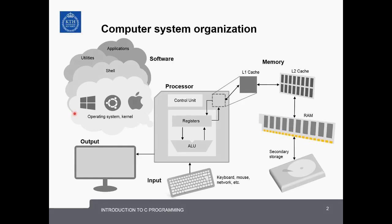Let's begin with a look at how a modern computer system is organized. At the heart of the computer system is the processor. Connected to the processor through the motherboard are input devices like a keyboard, mouse, or network, and also output devices like a computer monitor or printer.